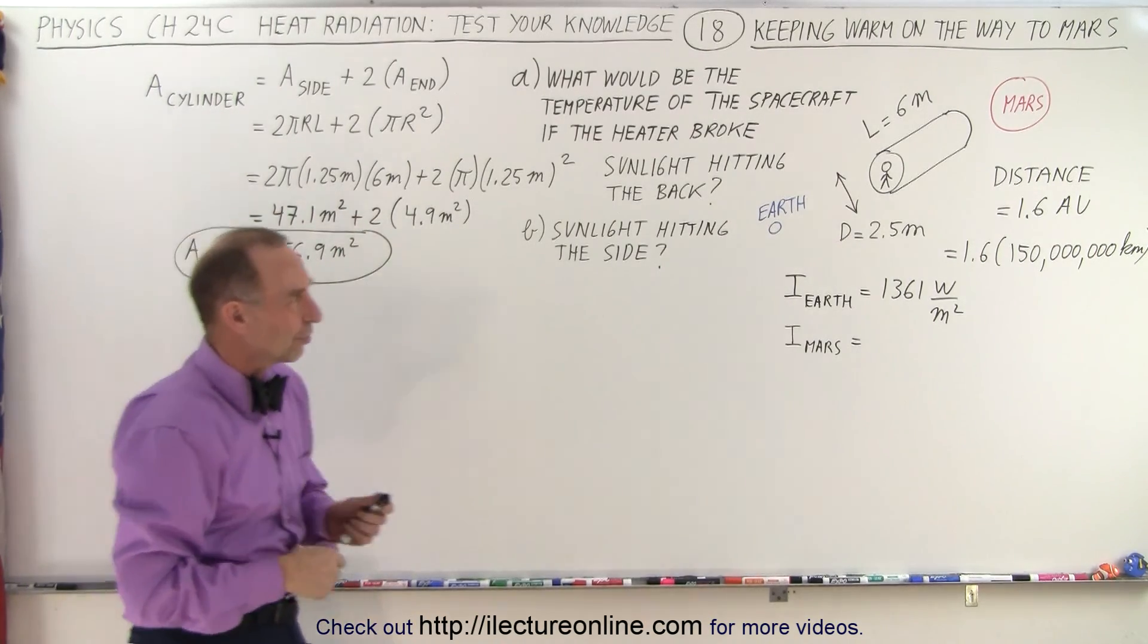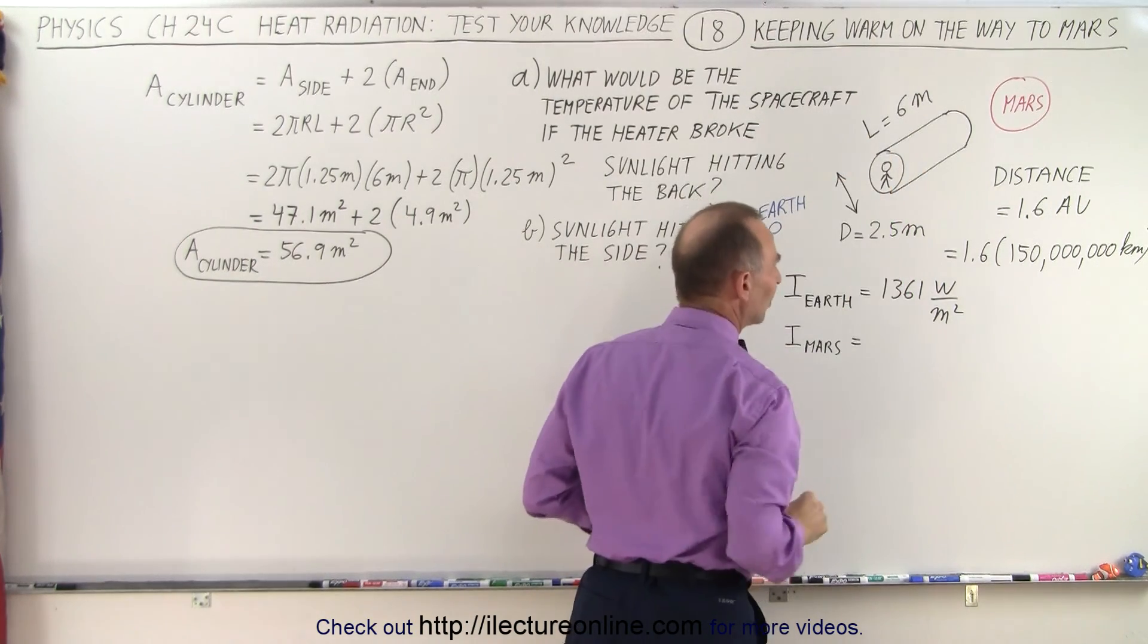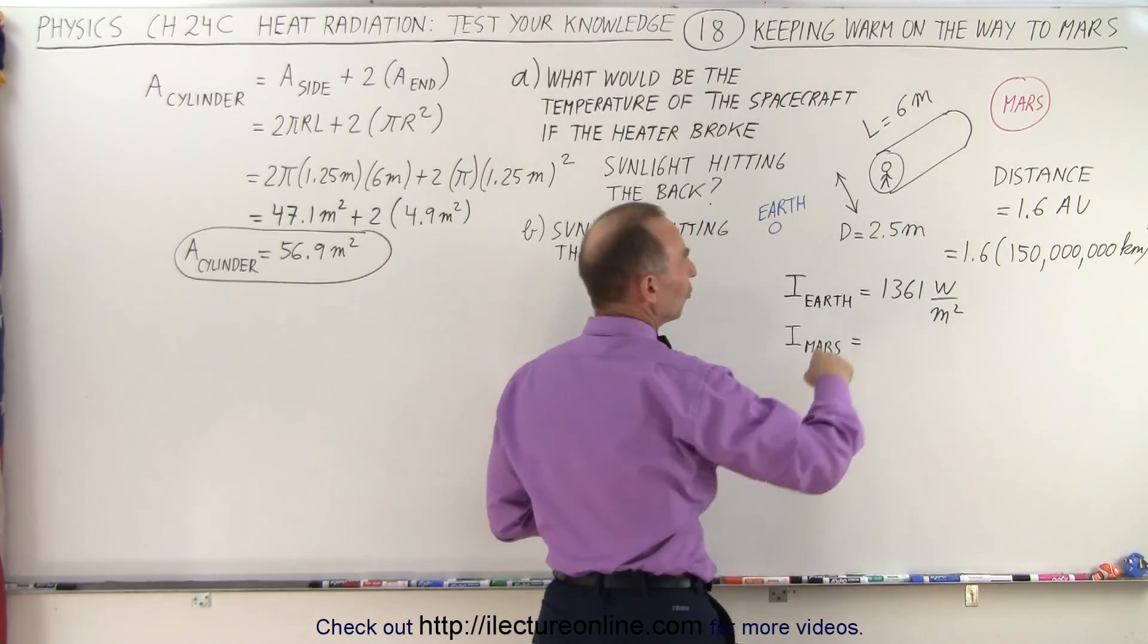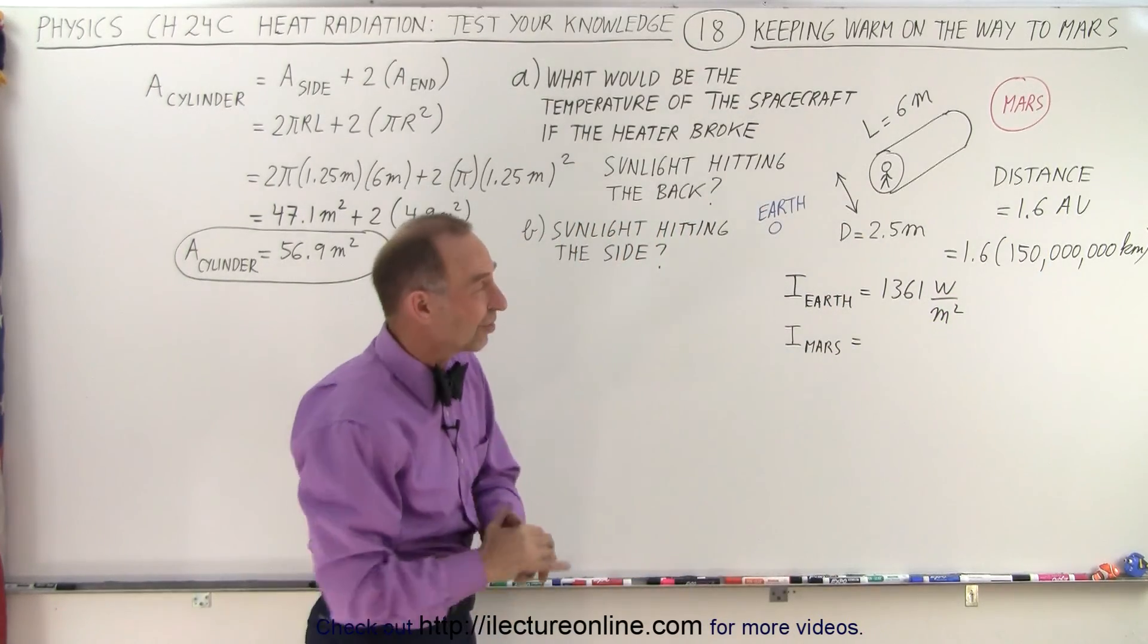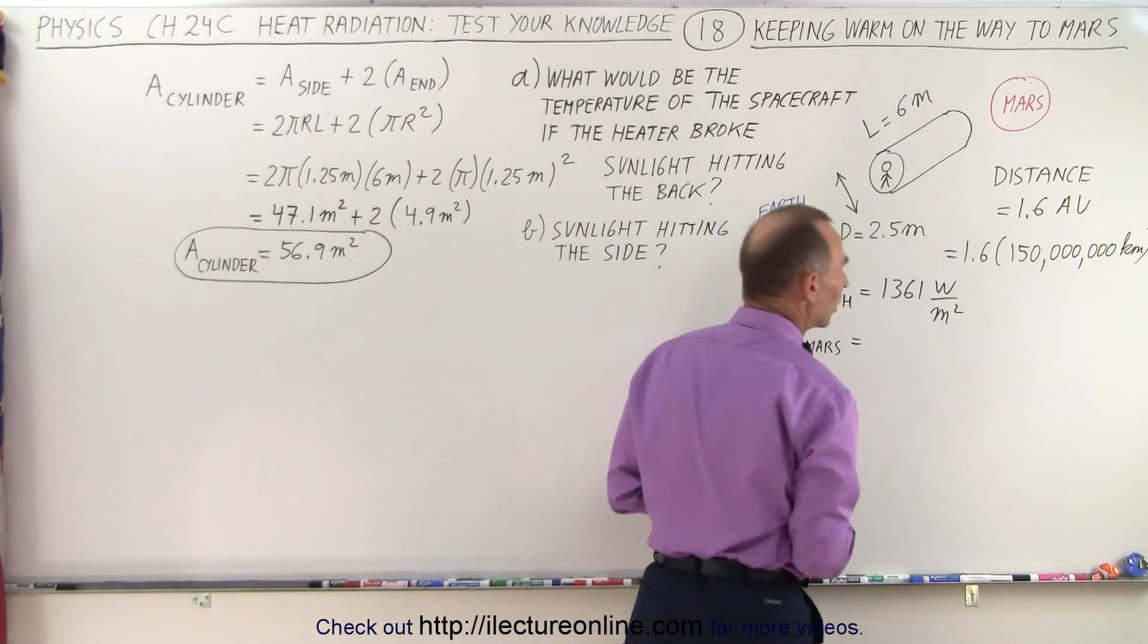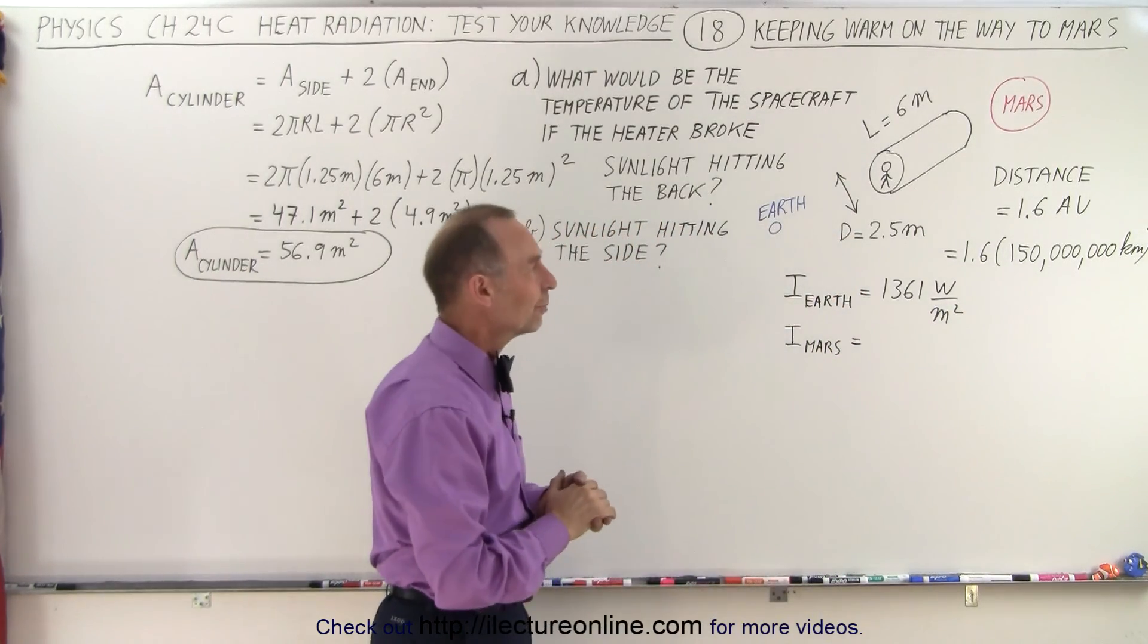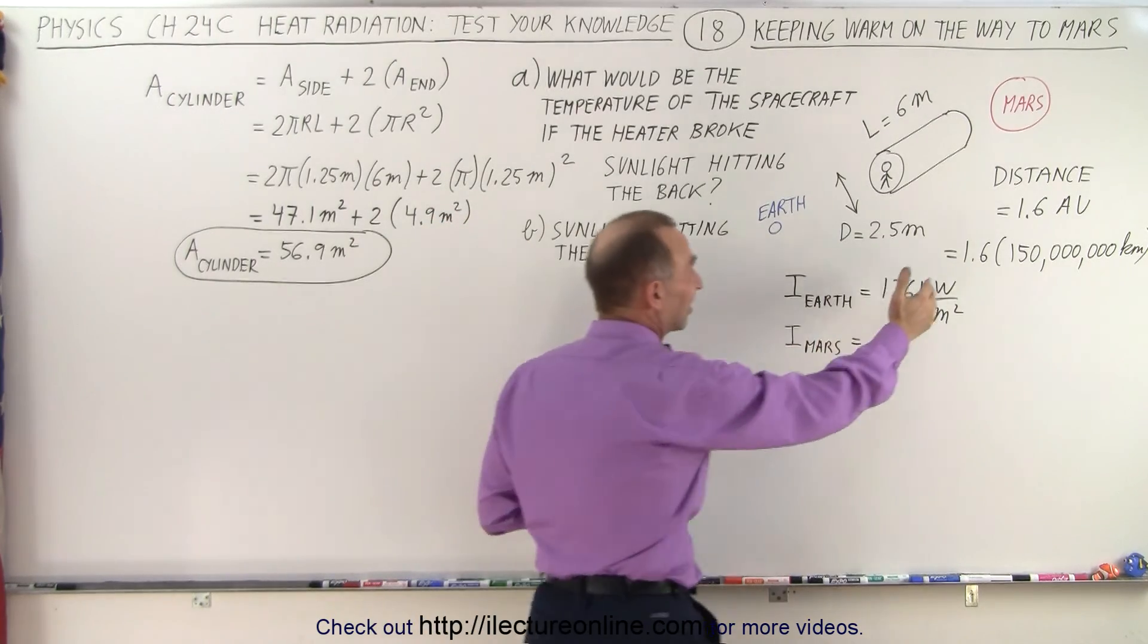So we did a little work ahead. First of all, the dimensions are that it's about 6 meters long, diameter is about 2.5 meters. The distance at Mars is about 1.6 astronomical units, it's about 1.6 times the distance to the Earth, which is around 150 million kilometers away from the Sun. So that means the distance from the Sun to Mars would be about 1.6 times that.